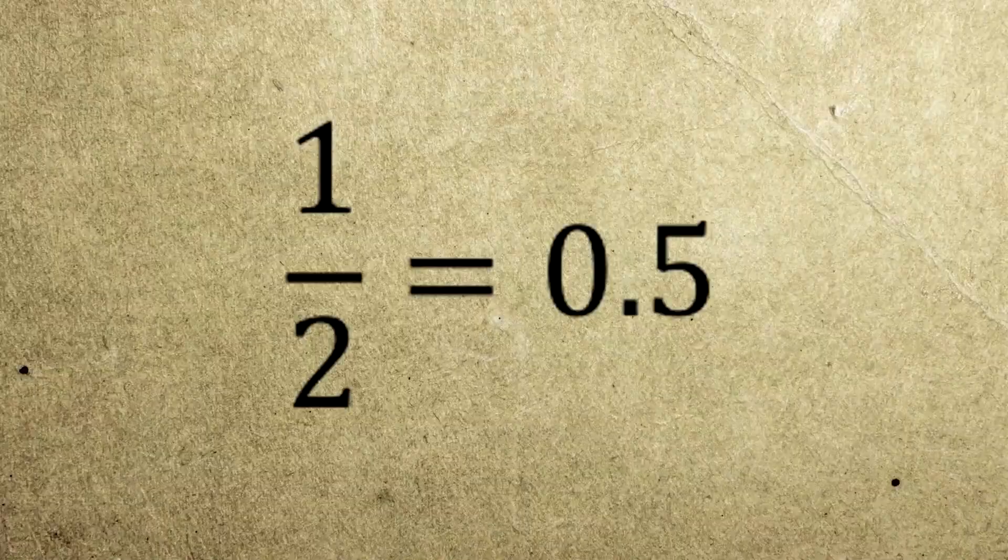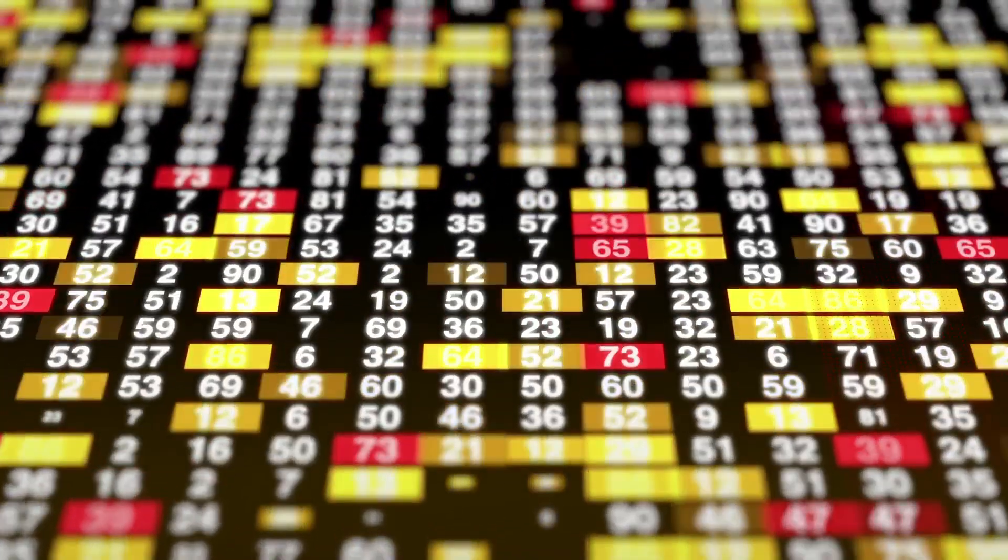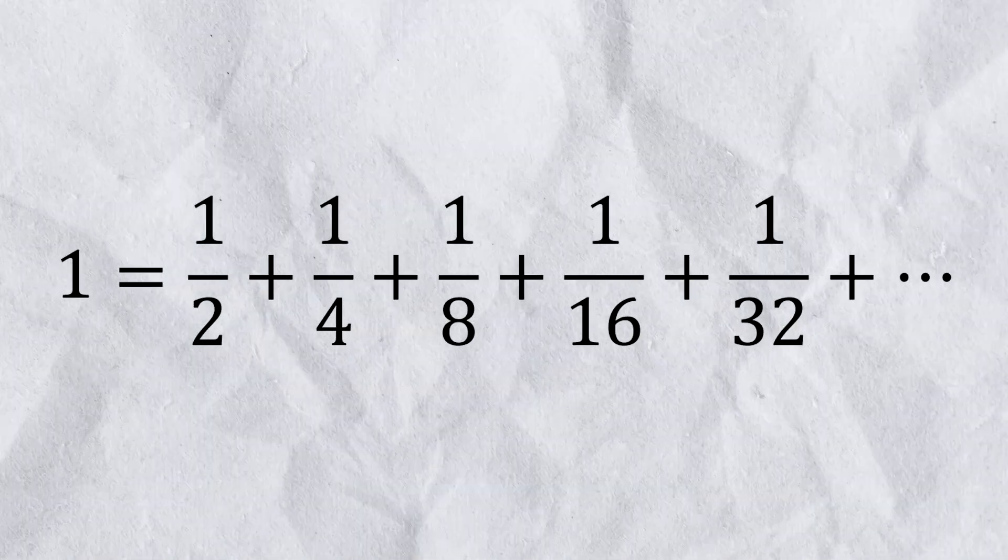For example, if we keep dividing a number in half, the result will decrease each time, but it will never reach zero, because there are infinite numbers between zero and any number. And like that, a normal number can be equal to an infinite sum.